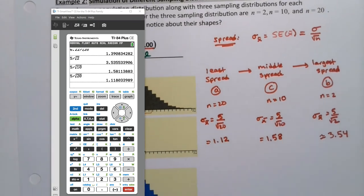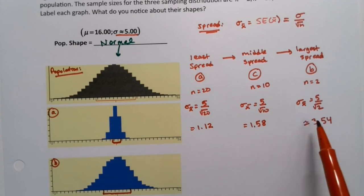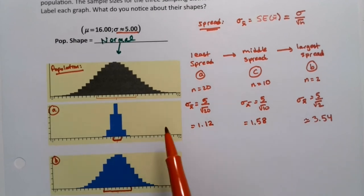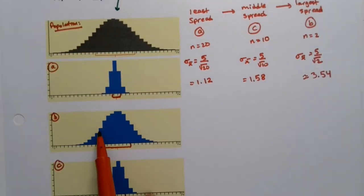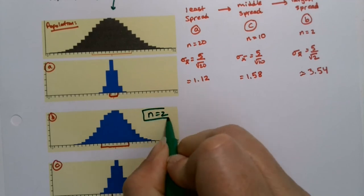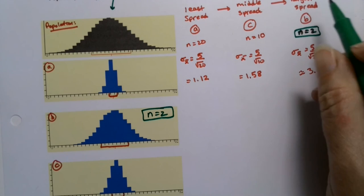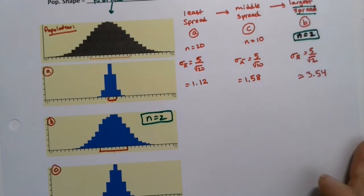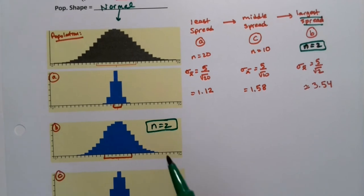There we have it. And you can see I was right. In case you didn't get it instinctively, then you can do the calculation and figure it out. The one with the largest spread is the one with the smallest sample size. So this one right here has to be n equals 2, because it has the largest spread. It's the most spread out of the graphs, other than the population itself, which would be sort of like n equals 1.